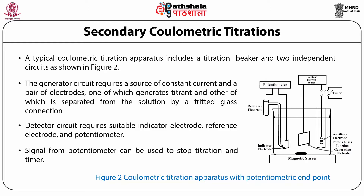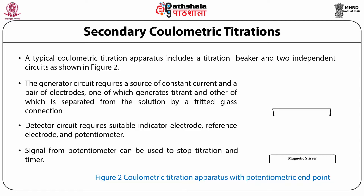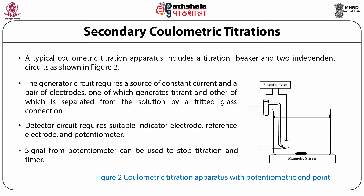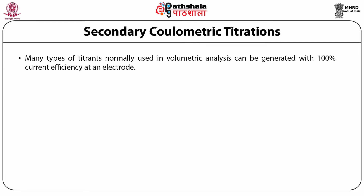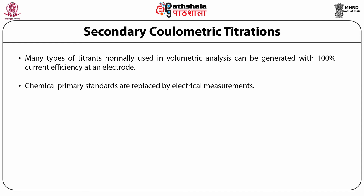For repetitive determinations, the timer can be calibrated in gram equivalents or even percent composition of a particular weight of sample. Many types of titrants normally used in volumetric analysis can be generated with 100% current efficiency at an electrode. These include oxidants, reductants, acids, bases, precipitants, complexing agents, and several metal ions. There is no need to prepare or store standard solutions. Thus chlorine and chromous ions are as easy to use as sodium chloride. Chemical primary standards are replaced by electrical measurements — stated another way, the electron becomes the universal primary standard.